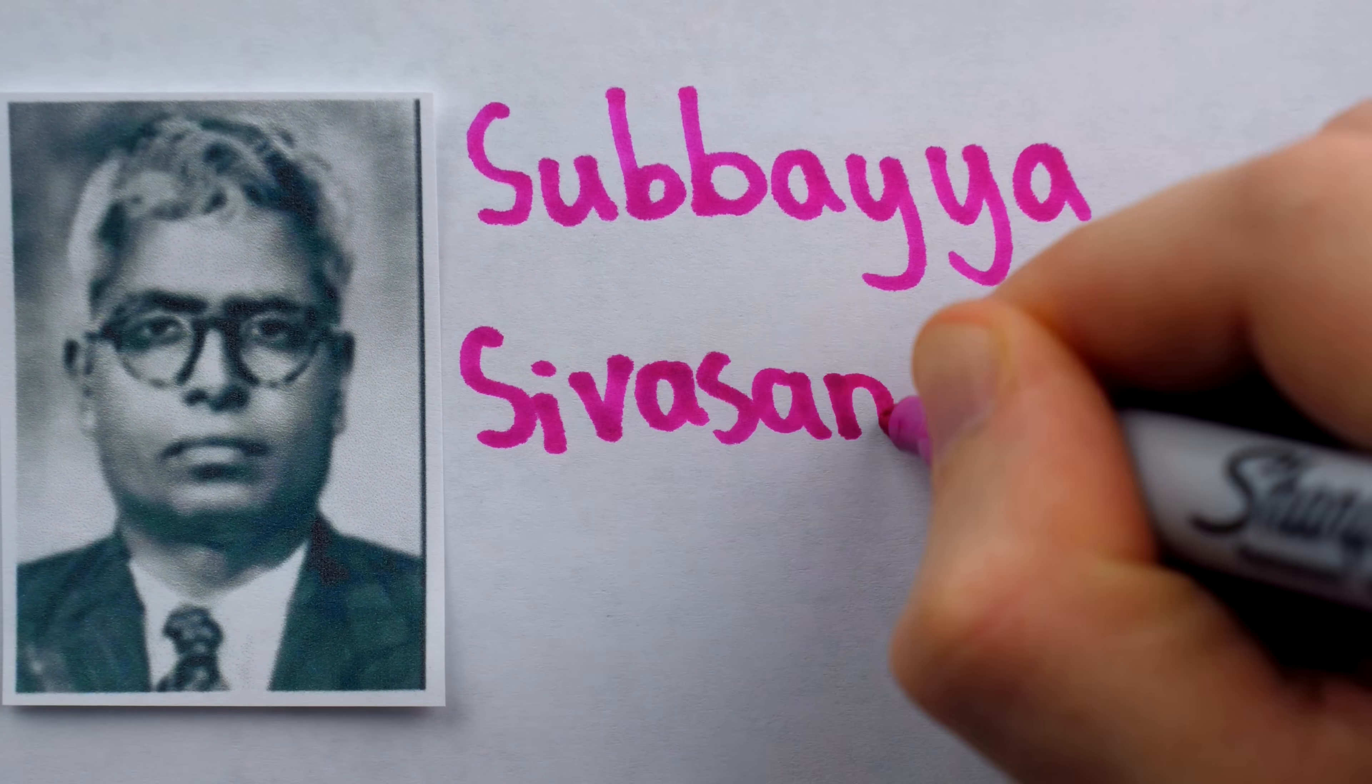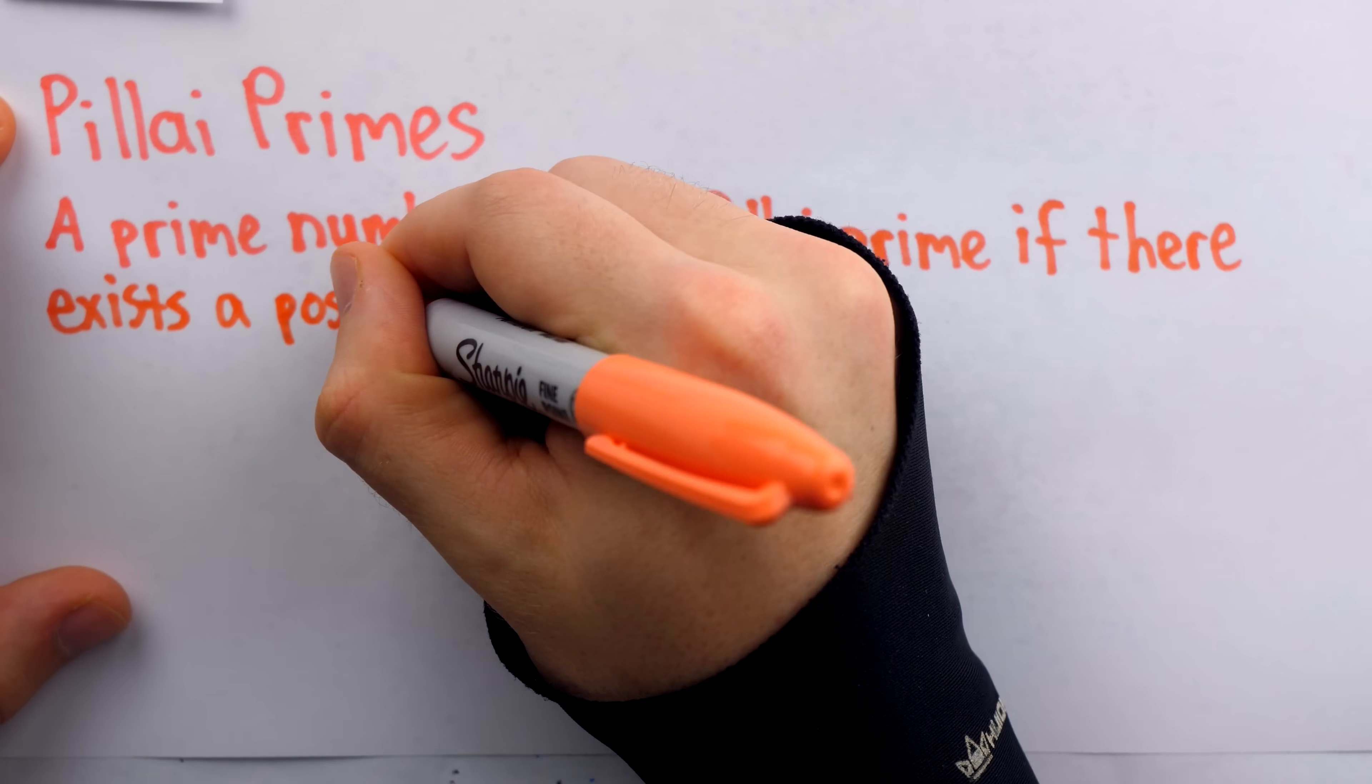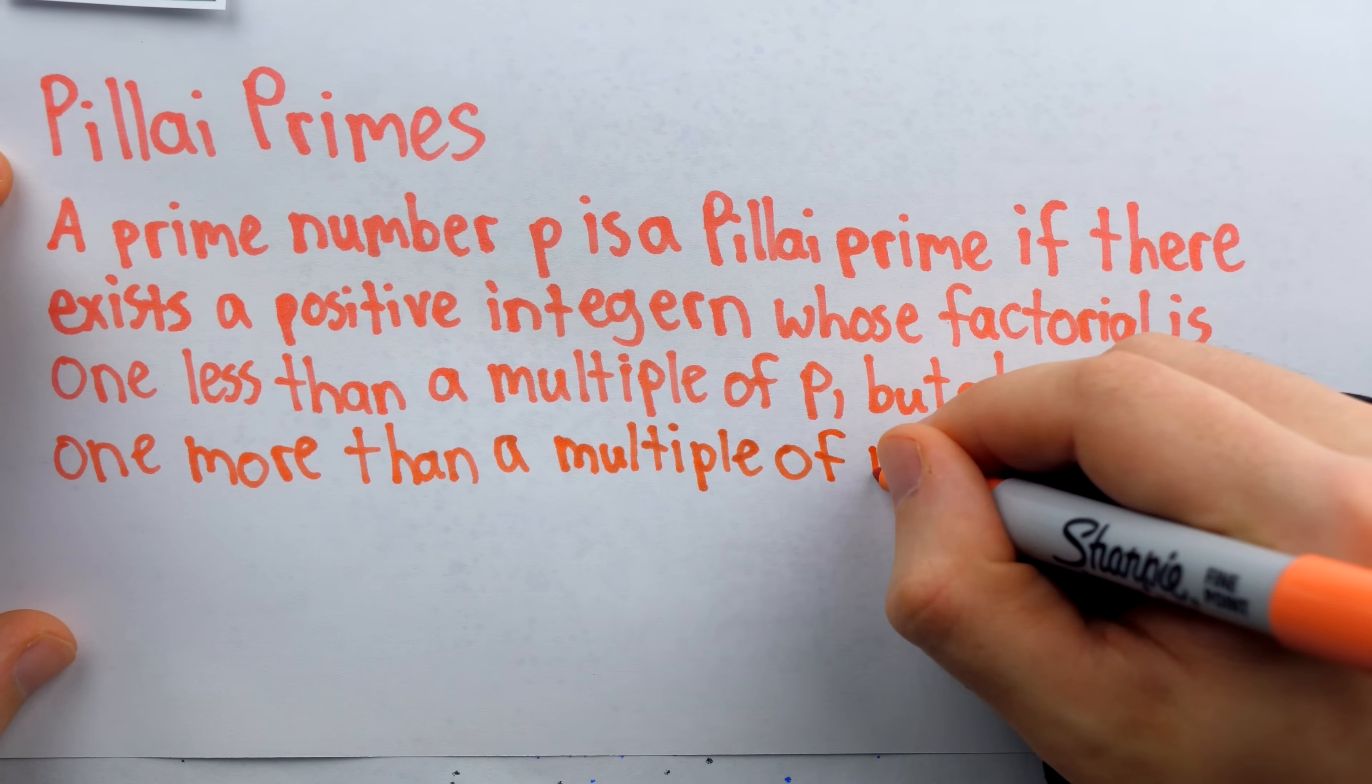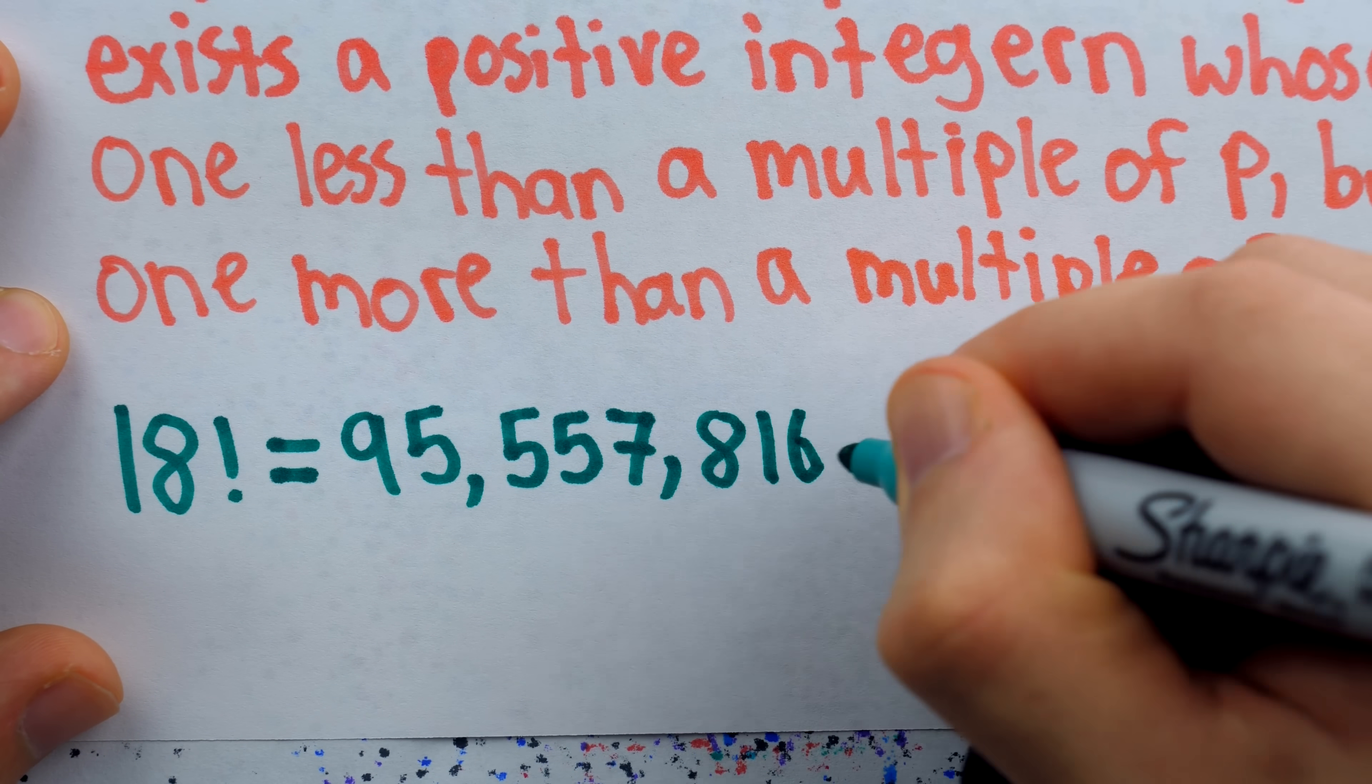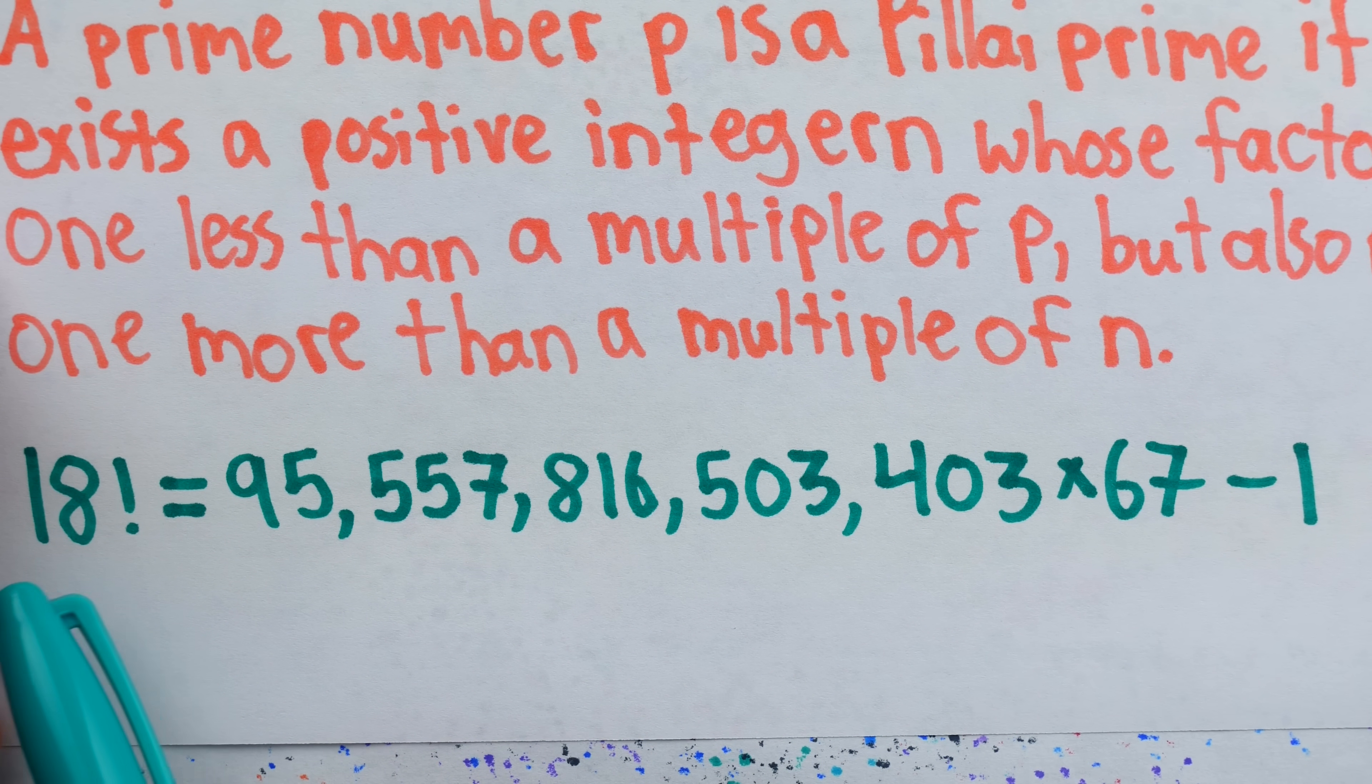This is Subaya Sivasan Karanarayana Palai. He is the namesake of the numbers he studied, called the Palai Primes. A prime number p is a Palai Prime if there exists a positive integer n whose factorial is 1 less than a multiple of p, but also p is not 1 more than a multiple of n. So you can see that 67 is a Palai Prime because 18 factorial is 1 less than 95,557,816,503,403 times 67, and 67 is not one more than a multiple of 18.